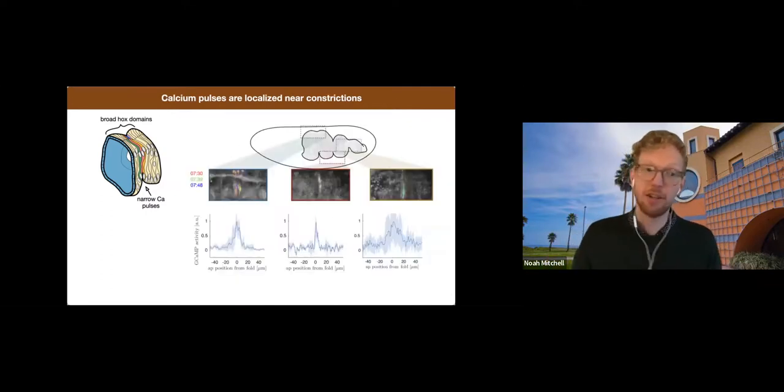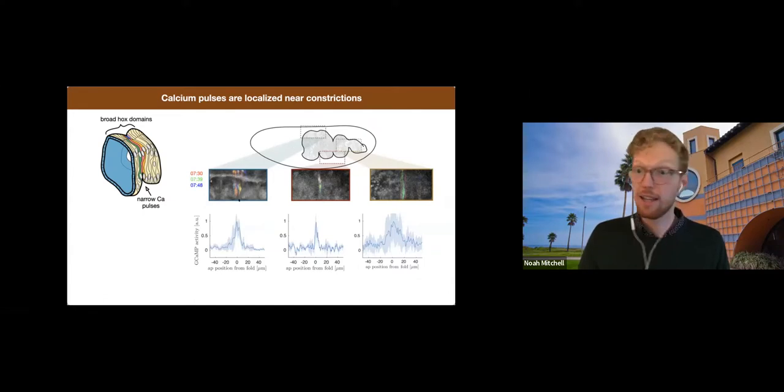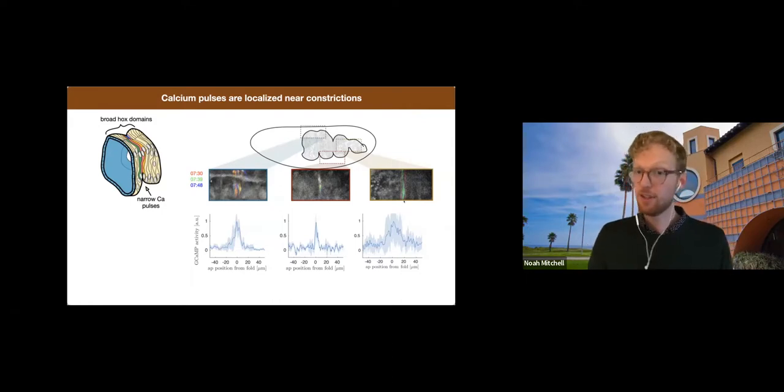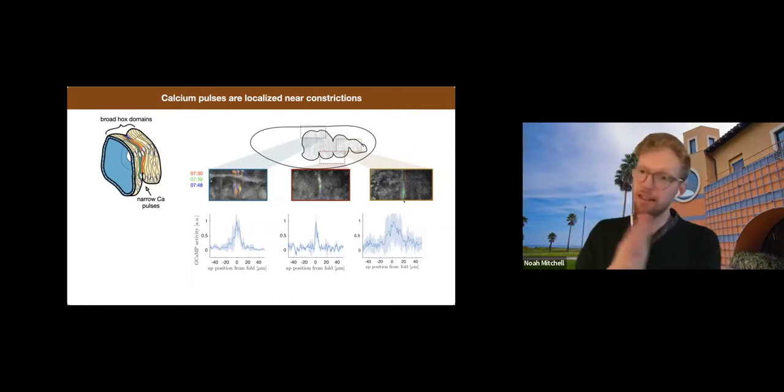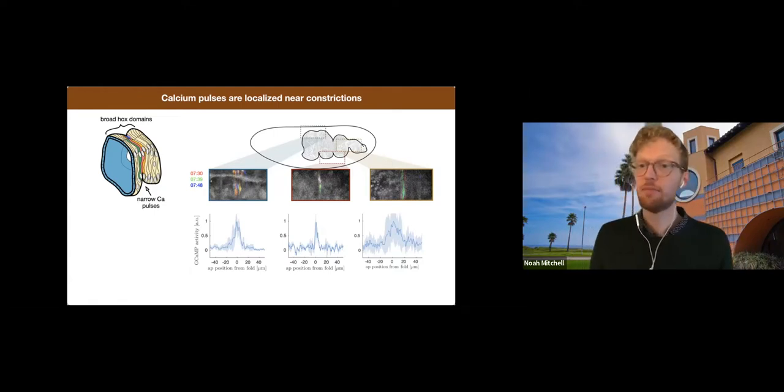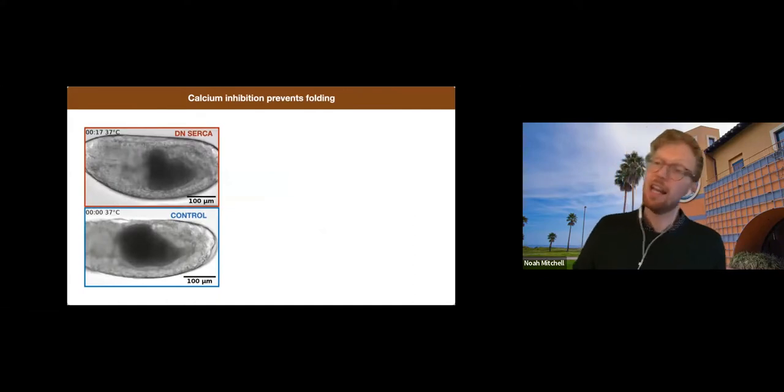And we've gone in and measured each fold now, and strikingly, they all have this highly localized band of calcium pulses that specifically appears right at the onset of constrictions. So this is a strong correlation, both in space and in time. And of course we wanted to test whether this is causal. So we can test the hypothesis that it's causal by inhibiting calcium pulses.